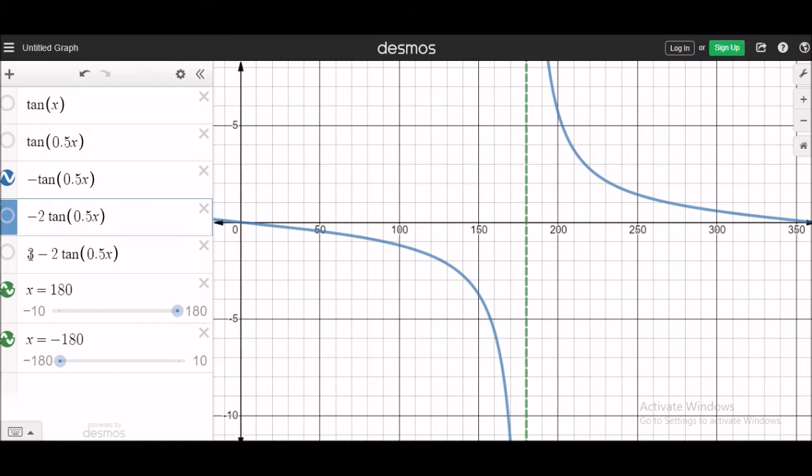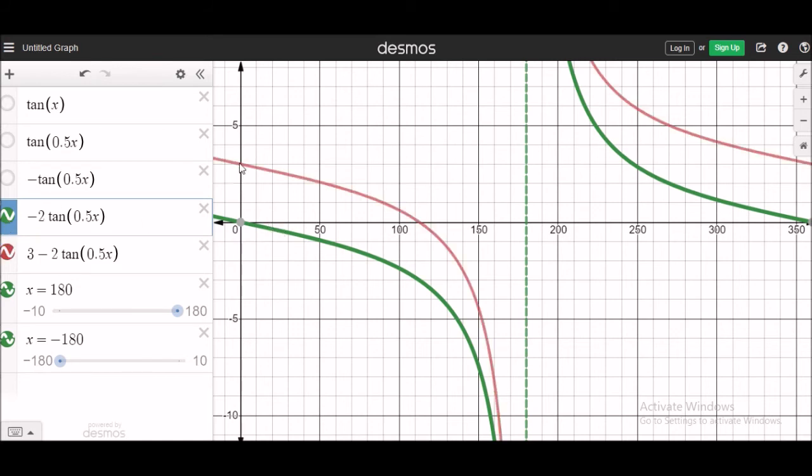And then now I am having a plus 3. I am adding a 3 to the existing graph. What is the meaning of 3 here? You are just shifting it 3 units up. When I shift 3 units up, you look at this.